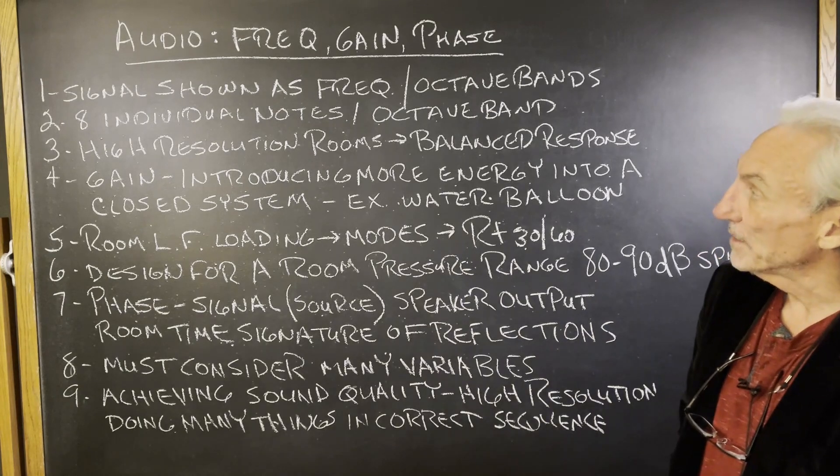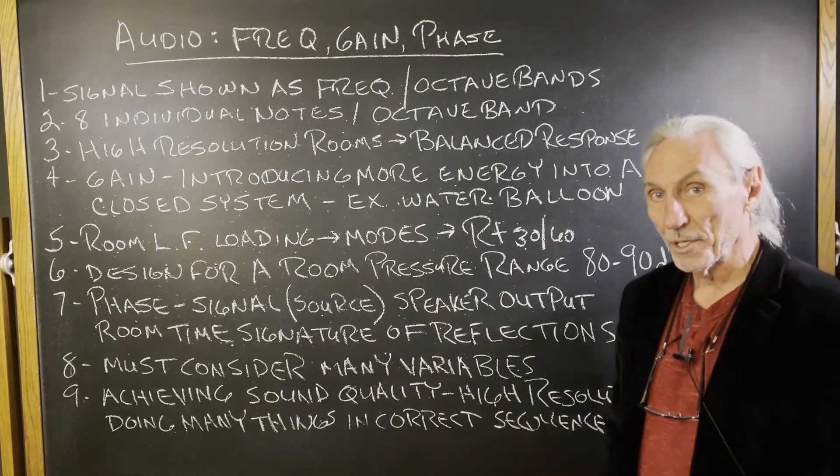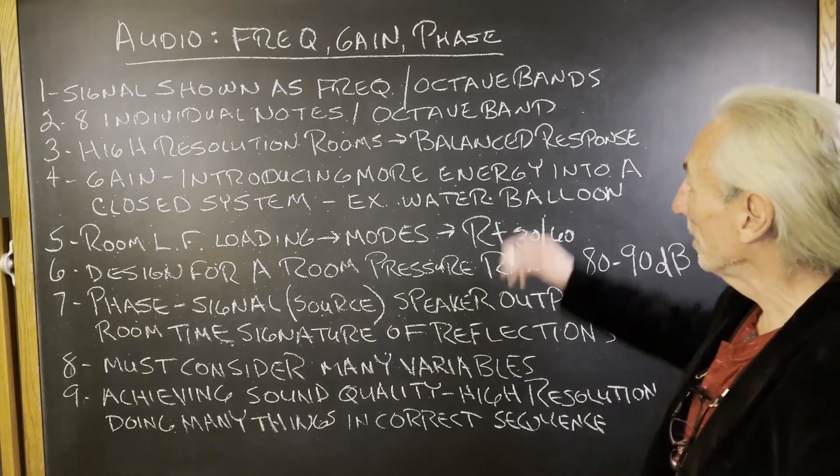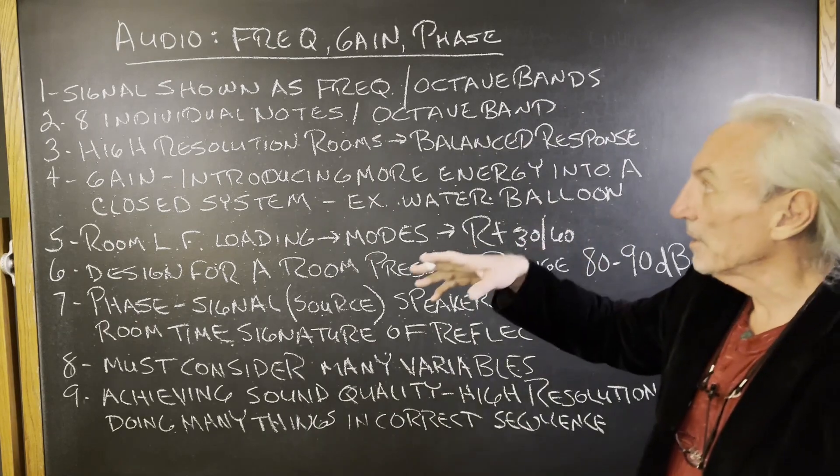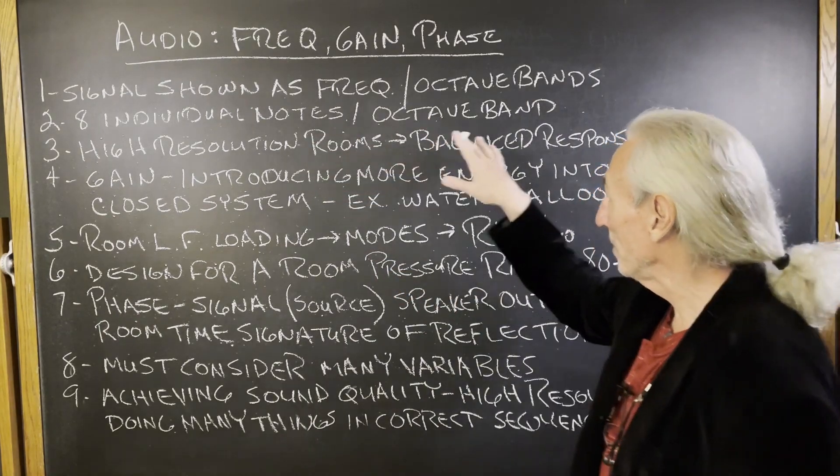Frequency, gain, and phase. Signal is shown as frequency. If we look at an RTA, the signal is shown as a frequency, a series of octave bands that moves up and down in real time. So we got eight notes in each octave band.